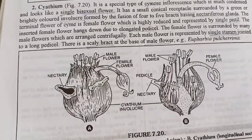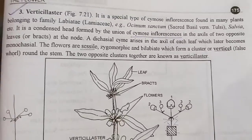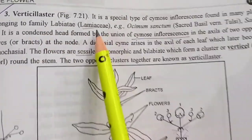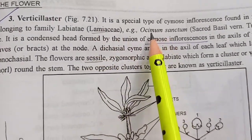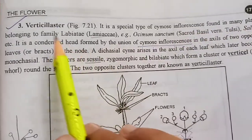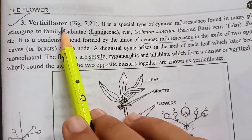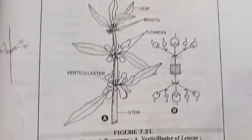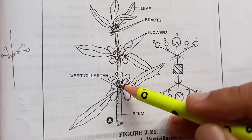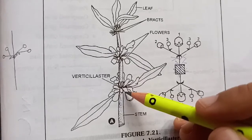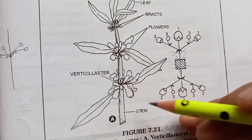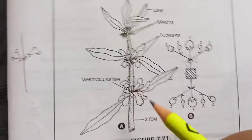Now let's study the next special type of inflorescence, that is verticilaster. Verticilaster bhi ek special type of cymose inflorescence hai, which is found in many plants belonging to the family Lamiaceae. Jaise ki Ocimum sanctum — that is tulsi — is an example of plants showing verticilaster type of inflorescence.